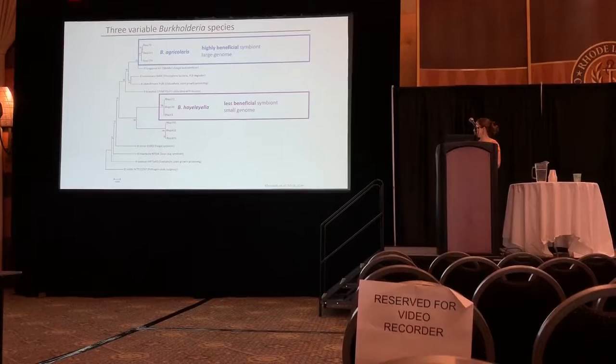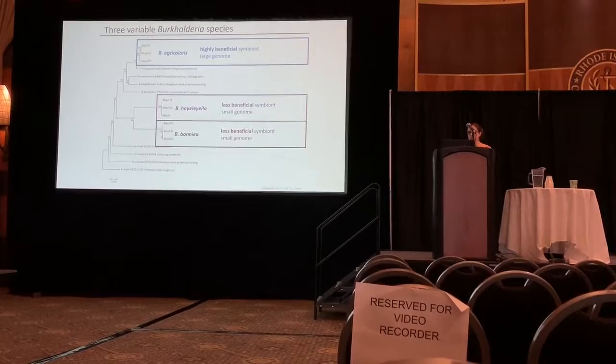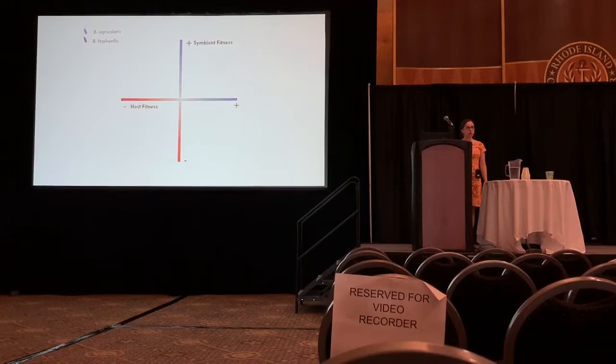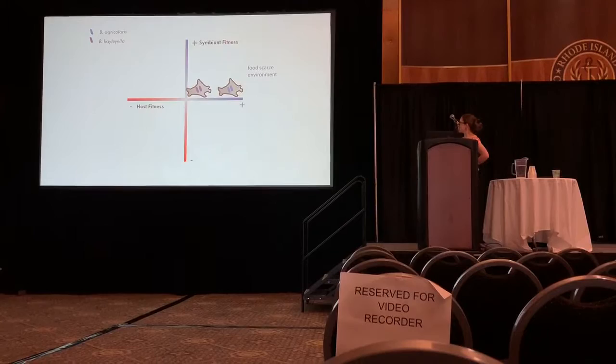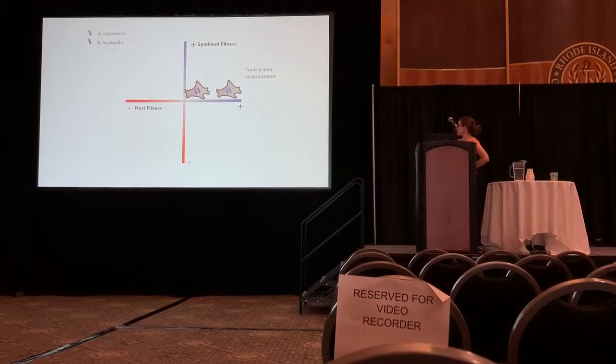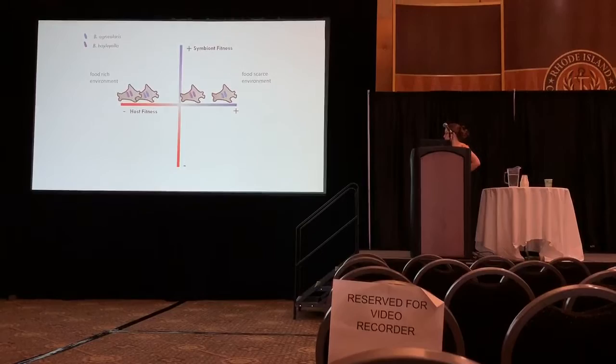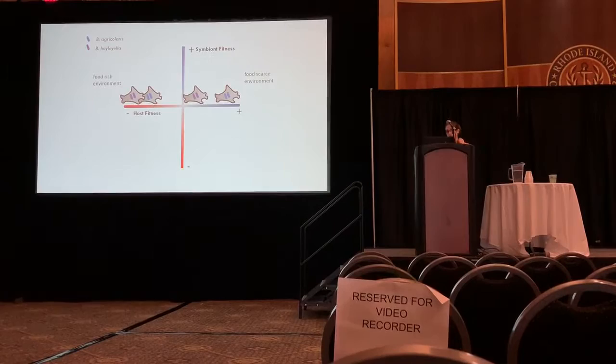There's also a third species similar to one of those which I won't discuss today. From what we know so far, we can go back to the 4x4 matrix and place our organisms based on host fitness. In food-scarce environments one Burkholderia species is pretty good on the fitness spectrum, the other is not that great but still better than nothing. In food-rich environments both are costly, but it seems worth keeping around if you don't know what your environment will be.